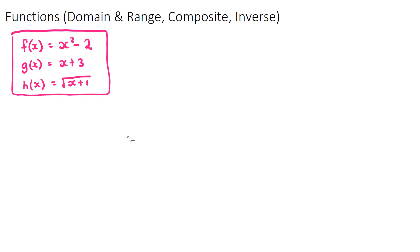First we'll find the output if we give the input some numbers. If you see f(3), you find the function f — which is x² - 2 — and substitute 3 in for x. So we get 3² - 2, which is 9 - 2, which is 7. So if the input variable is 3, the output will be 7. That's what f(3) means.